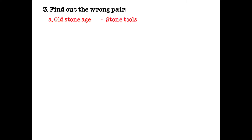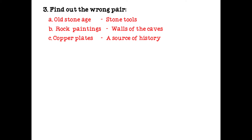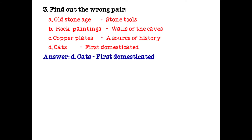Find out the wrong pair. Old stone age and tools — this is correct. Rock paintings and walls of the caves — correct. The wrong pair is cats and first domesticated. The correct answer is dogs are the first domesticated animal.